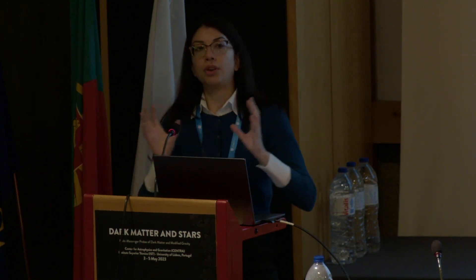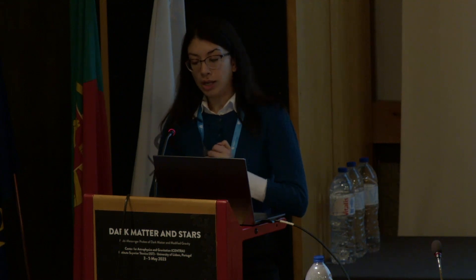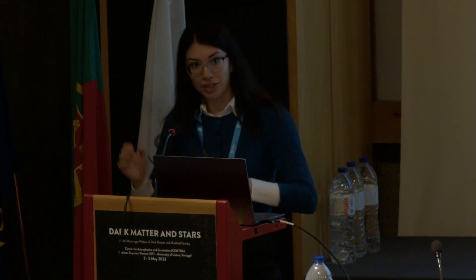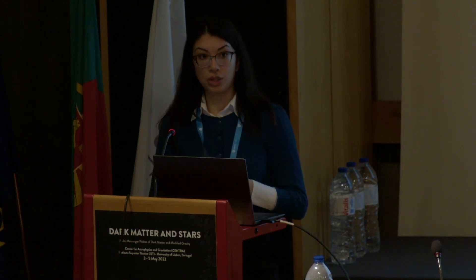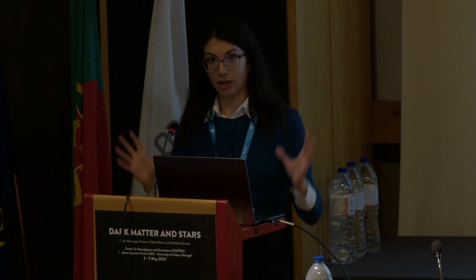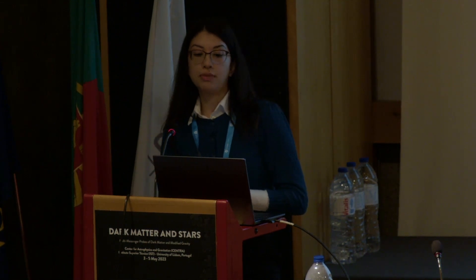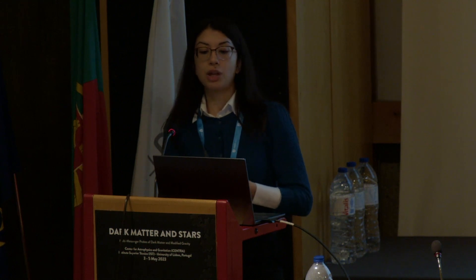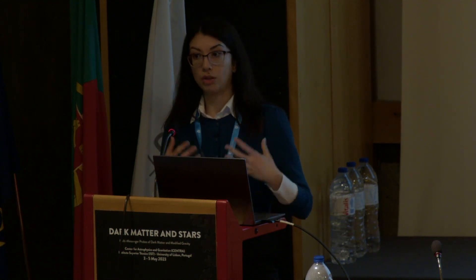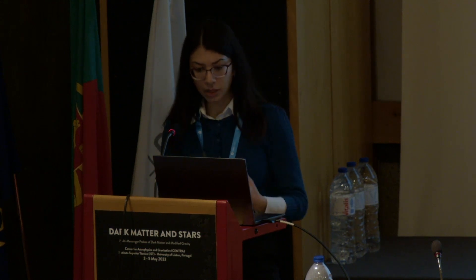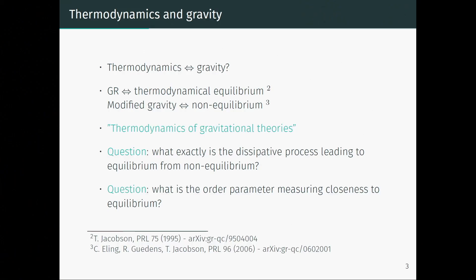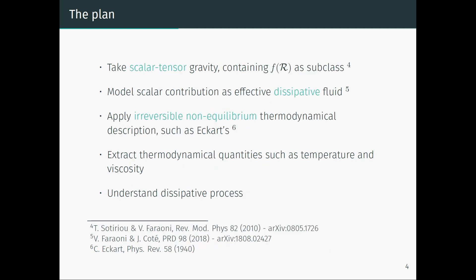In this thermodynamics of gravitational theories, we're trying to work in a sort of theory space — a meta-theory of theories — where we have different theories of gravity and try to understand if they can be related in a unified picture. Two questions were left open by this approach: first, how do we get from the non-equilibrium to equilibrium — what kind of dissipative process would we picture there? And also, what's the order parameter that measures the closeness to equilibrium? So this is what we've been trying to address, and the plan involves taking a scalar-tensor theory in a very generic class.